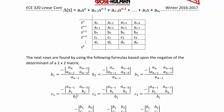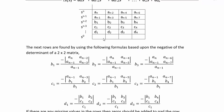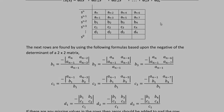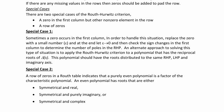For the next row, C1 equals negative (a_(n-1) * B2 minus B1 * a_(n-3)) divided by B1. Continuing the pattern, D1 equals negative (B1 * C2 minus C1 * B2) divided by C1, and D2 equals negative (B1 * C3 minus C1 * B3) divided by C1. If there are any missing values in the rows, zero should be added to pad the row.